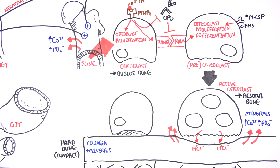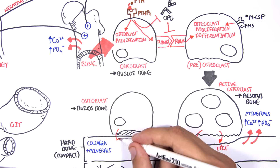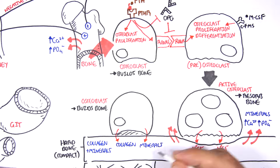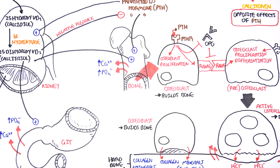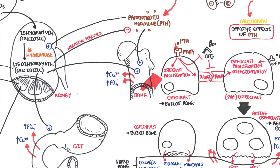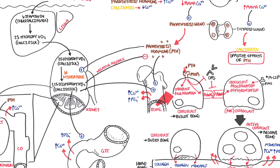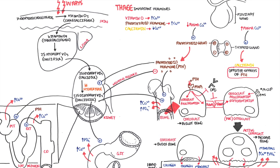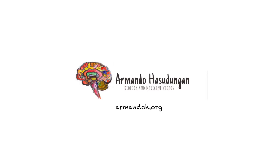To recap: parathyroid hormone stimulates the whole process, activating osteoclasts to release calcium and phosphate from bone. Osteoblasts have the opposite effect — their goal is to build bone by releasing collagen and minerals. This video covered endocrinology, calcium and phosphate regulation, and the three main hormones: vitamin D (active form calcitriol), parathyroid hormone, and calcitonin. Thank you for watching.